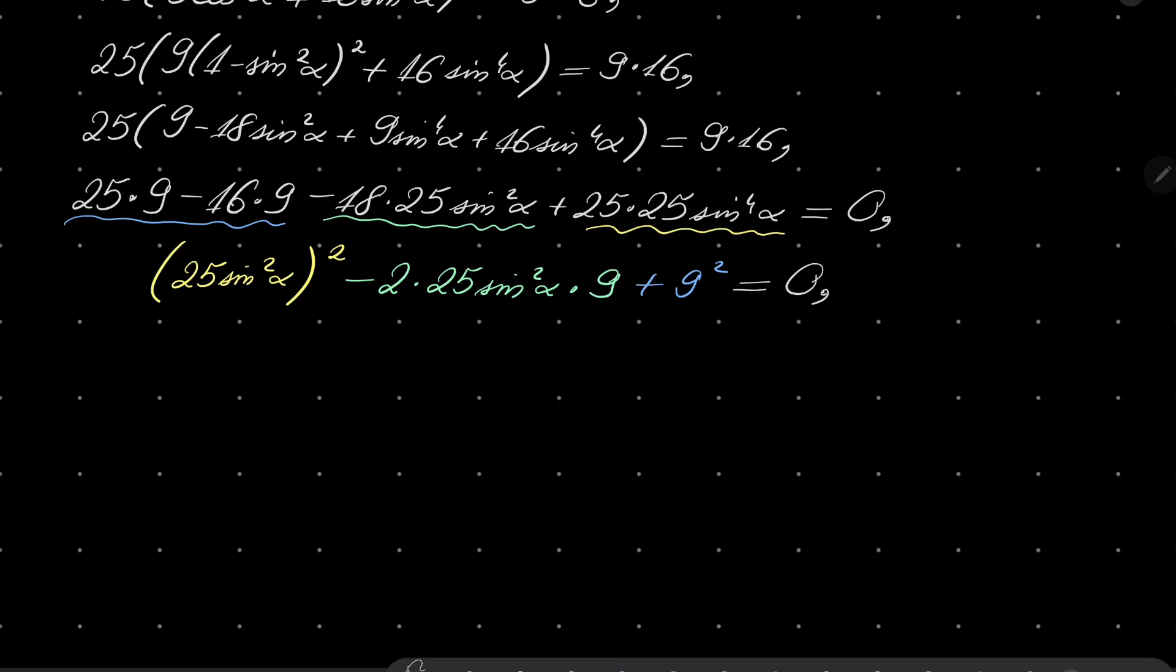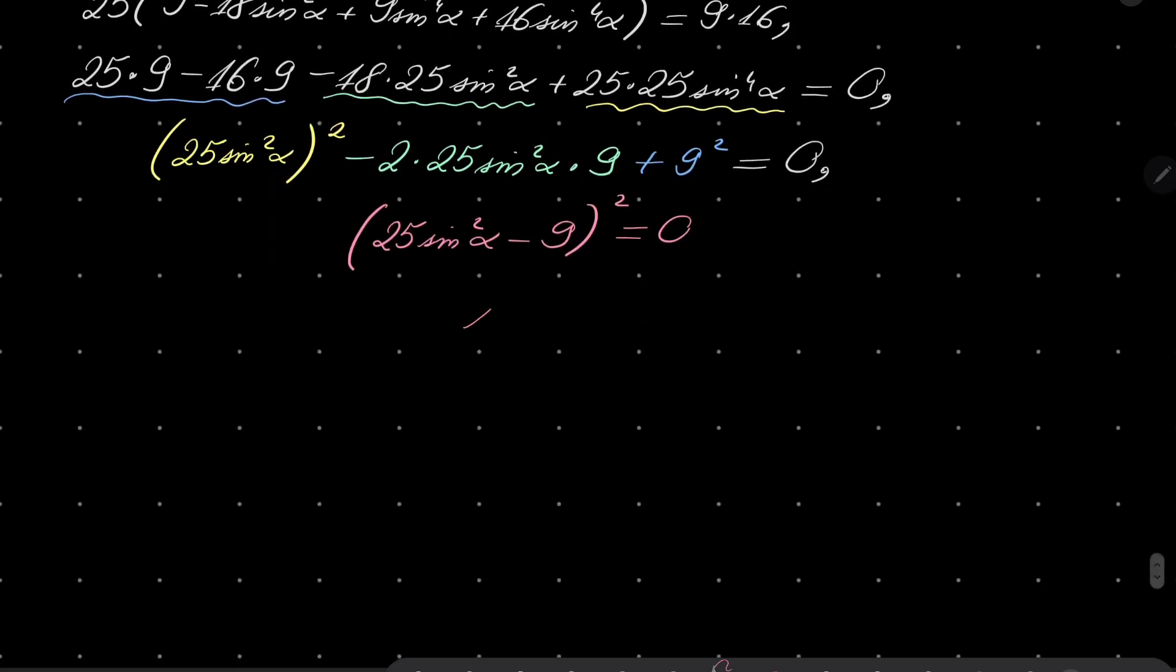Luckily, this simplifies greatly because of the well-known formula. It can be simplified to 25 sine squared of alpha minus 9 squared equals 0, which of course means that sine squared of alpha equals 9 over 25, which in turn means that cosine squared of alpha is 1 minus that number, so it's 16 over 25.